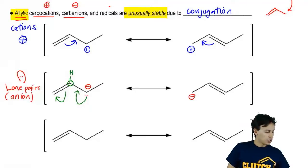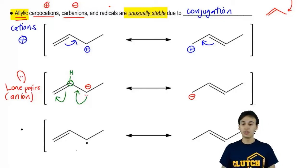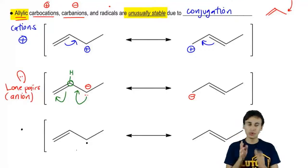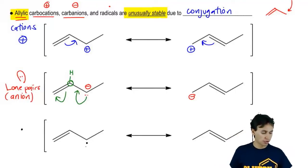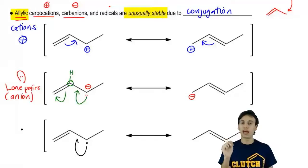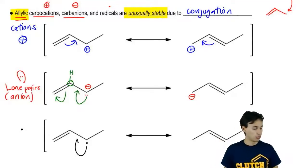Last one is radicals. What if we have just one electron next to a single electron next to the double bond? Now remember that radicals actually move with three arrows. They move with three half-headed arrows so it's a little bit weird.